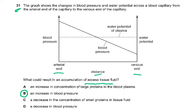Increase in blood pressure is correct; the rest are wrong. A decrease in blood pressure is wrong. A decrease in the concentration of proteins in the tissue fluid is wrong — proteins do not leak out into tissue fluid. An increase in large proteins is also wrong; in fact, if there was a decrease in the concentration of large proteins, that would have also resulted in an accumulation of excess tissue fluid.